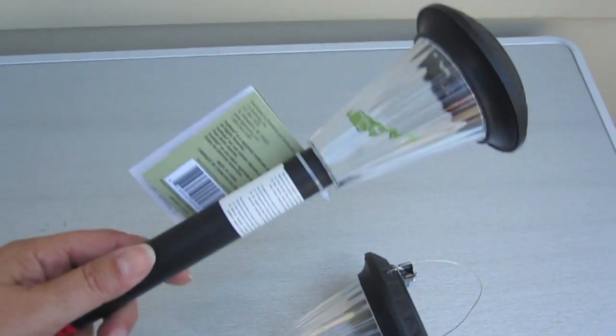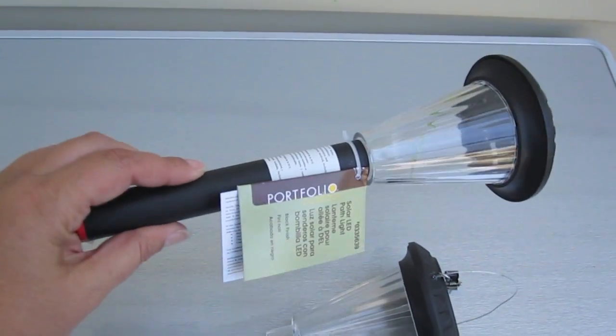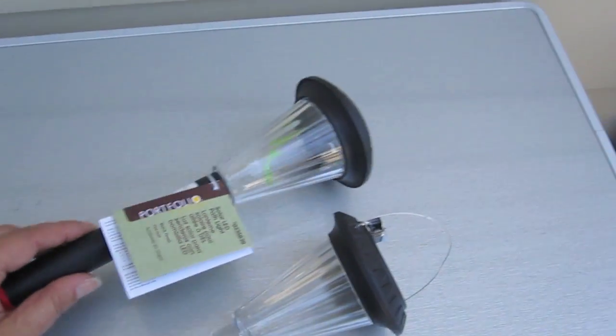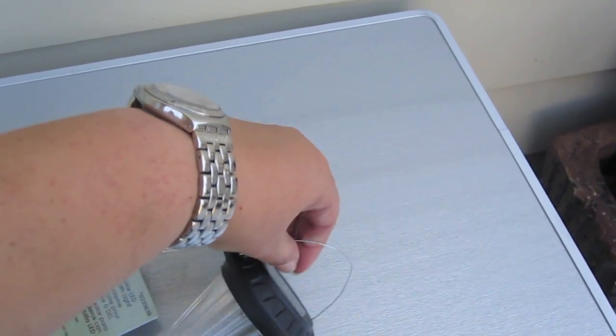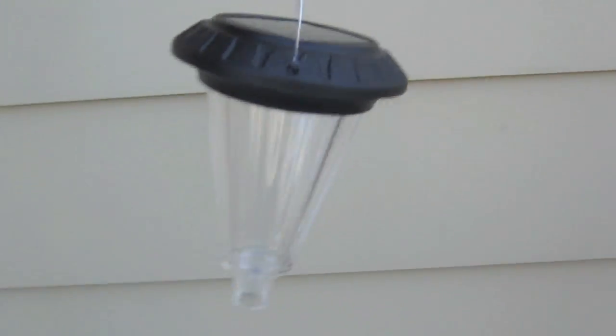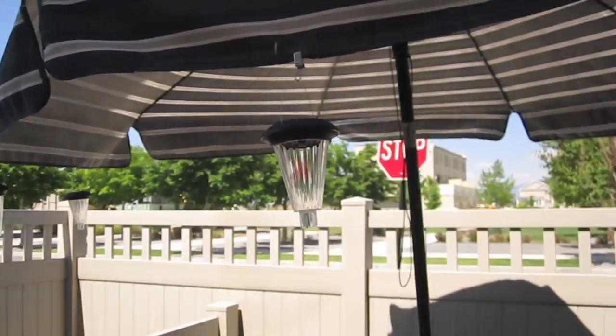What we're going to do is take one of these solar lights, just inexpensive solar lights—I got this one for $2 at Home Depot—and turn it into one of these hanging solar lights that you can put on your umbrella like this.